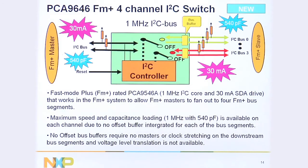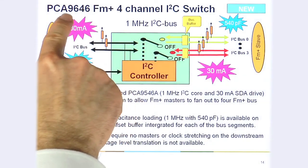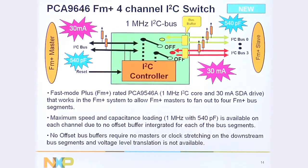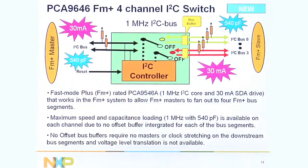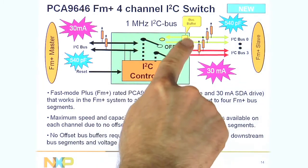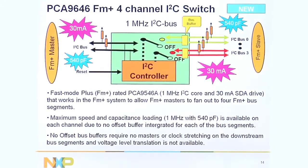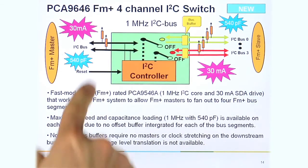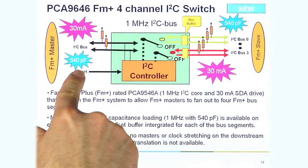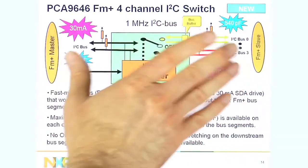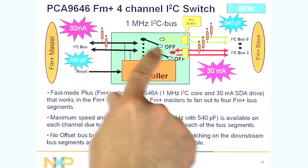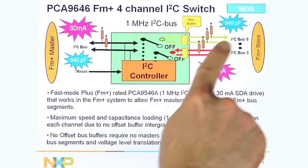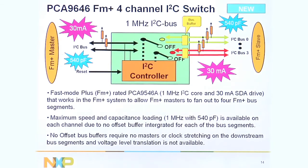We also have a new device coming out in Q1 2011: the PCA9646. The '6' means it's a fast mode plus device, going up to 1 MHz with 10 times the normal drive. You can go up to 540 picofarads at 1 MHz, so it's a higher-speed multiplexer. It drops in as a replacement for the PCA9546 with the same footprint. This device also has bus buffers within each channel, which isolates capacitance on each bus segment — unlike the PCA954X series where capacitance from all sides is combined into one system.